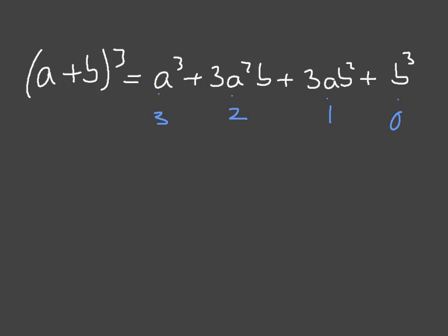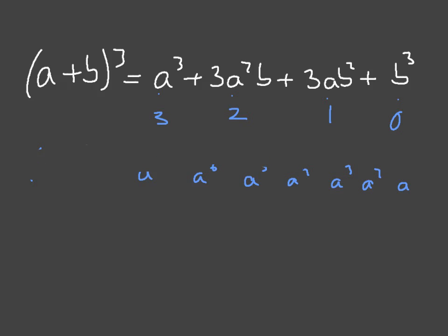Remember, any number raised to the power of 0 is just 1, and that is always going to be true. For example, in (a + b) to the power of 7, one thing we know for certain is that from one term to the next, the powers of a will be: a^7, a^6, a^5, a^4, a^3, a^2, a^1, and then 1 — which is a to the power of 0. That will always be true.